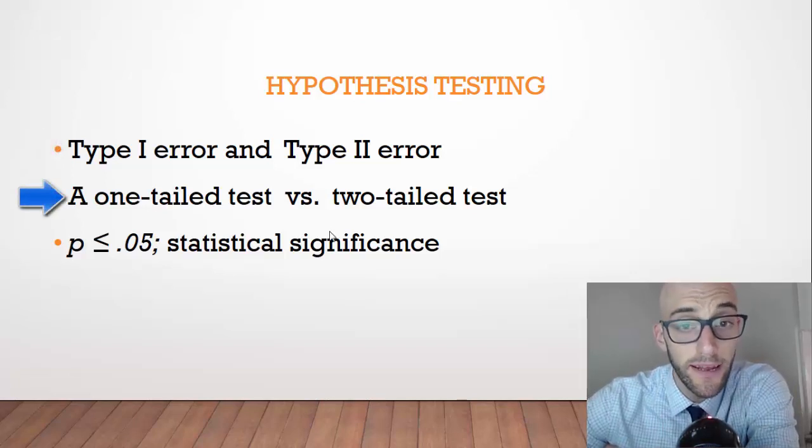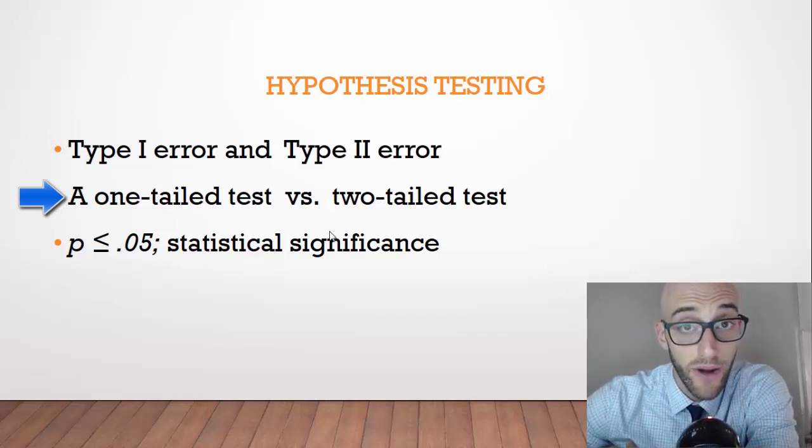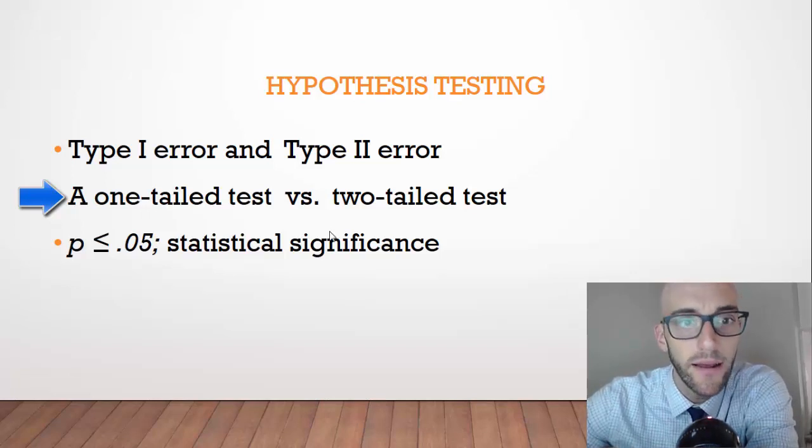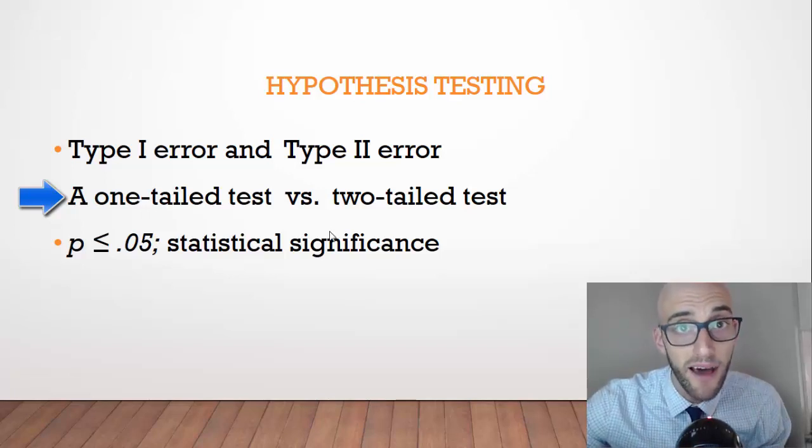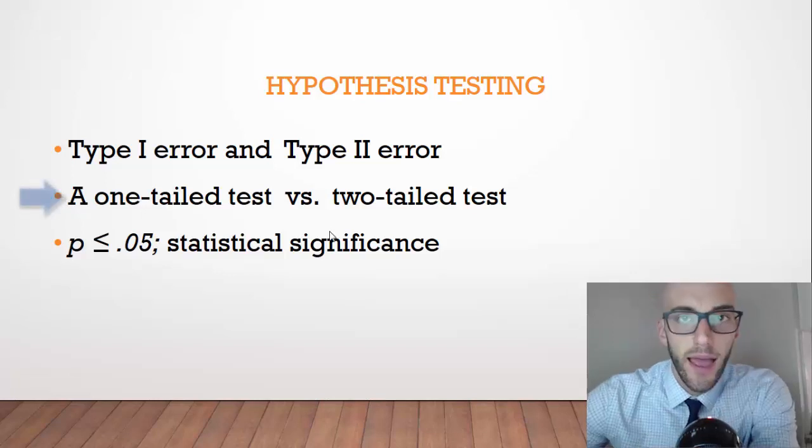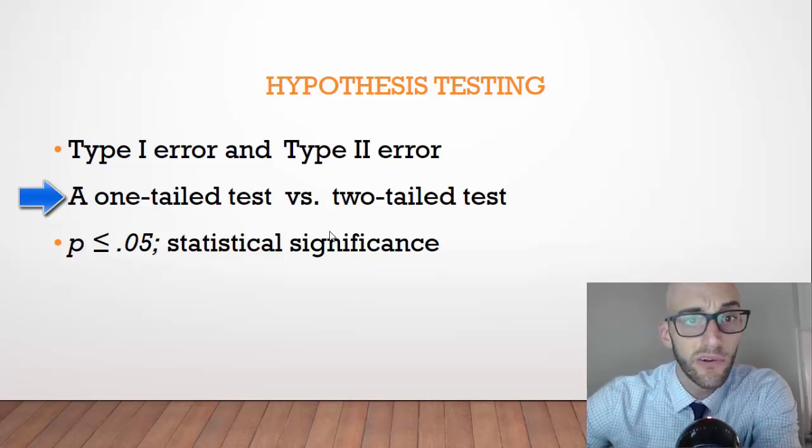It's important to know the difference between a one-tailed test and a two-tailed test. In a one-tailed test, we're specifying the directionality, versus a two-tailed test where we're saying there's a difference but not in any specific direction. The p-value of 0.05 or less indicates statistical significance. Generally, that's the threshold where we would say this change isn't due to chance alone.